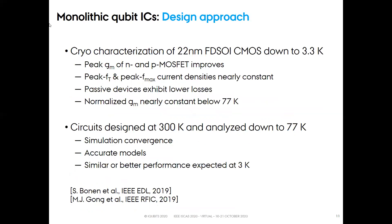We based our designs on the cryogenic characterization of the 22 nanometer FDSOI CMOS technology down to 3.3 Kelvin, which is available in the literature. The transconductance of the MOSFETs improves at cryogenic temperatures, while the peak fT and peak fmax current densities remain nearly constant. The passive devices exhibit lower losses, while the normalized transconductance remains nearly constant below 77 Kelvin. For this reason, we designed the circuits at 300 Kelvin and analyzed them down to 77 Kelvin, where the simulations converge, the models are accurate, and we can expect similar or better performance at 3 Kelvin.